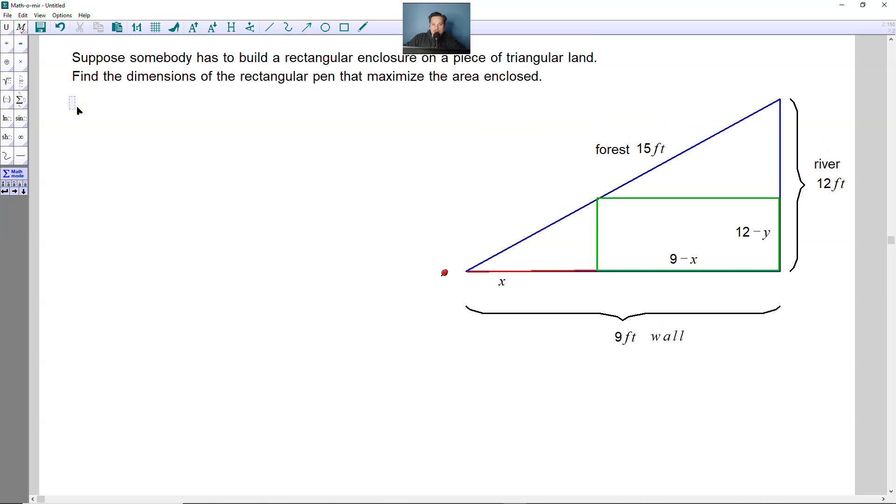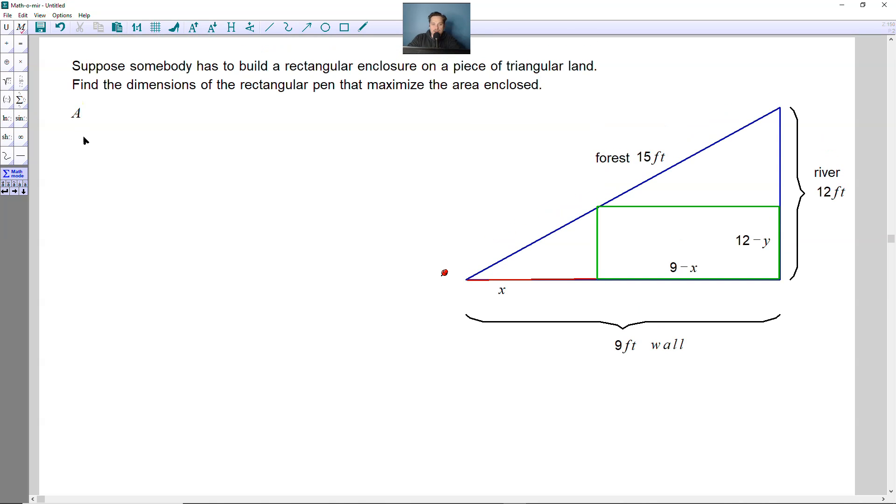So by using that, what you can do is build the following: the area of the rectangle would be 9-x, this quantity here, and then you would multiply that by 12-y. Now this has two variables, x and y. I need to get rid of y as my variable here. So how can I do that?